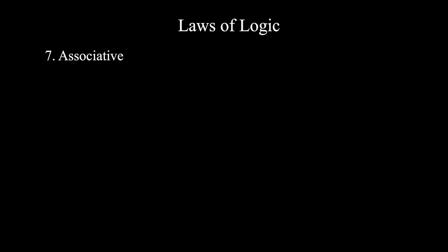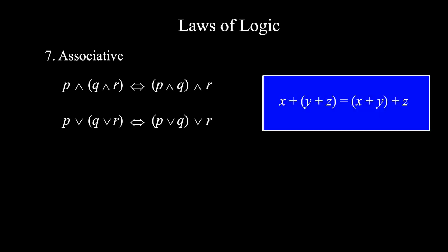Number seven, associative. p and (q and r) is equivalent to (p and q) and r. p or (q or r) is equivalent to (p or q) or r. You can think of x plus (y plus z) equals (x plus y) plus z. So, here you can just take away the brackets. It does not matter which operation you process first.